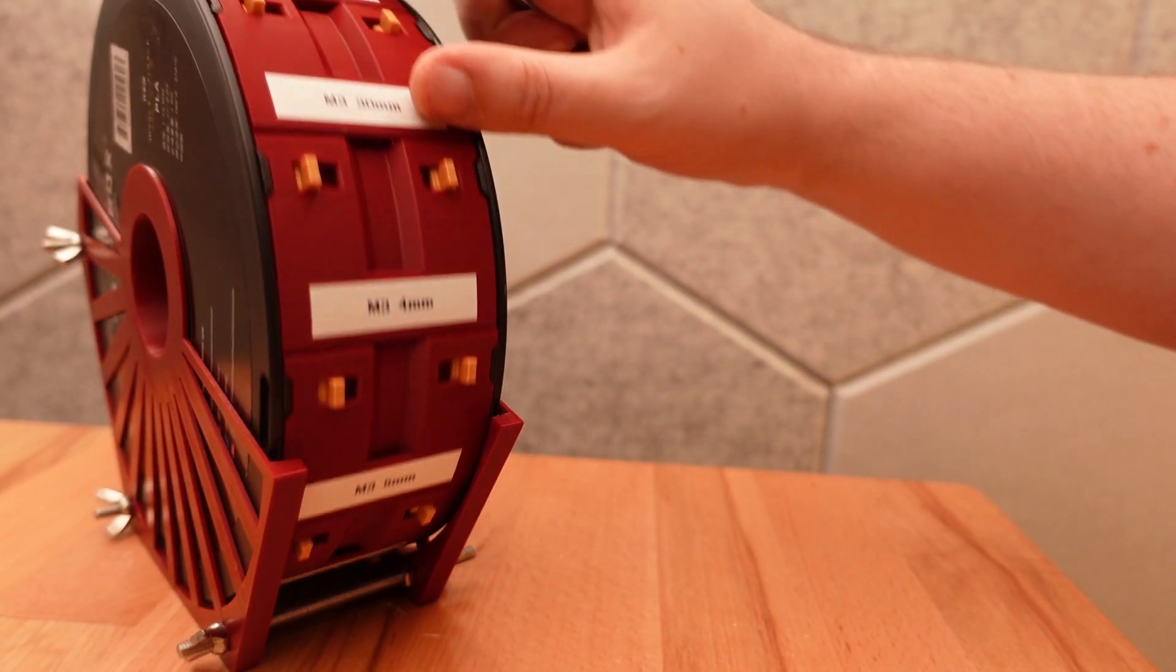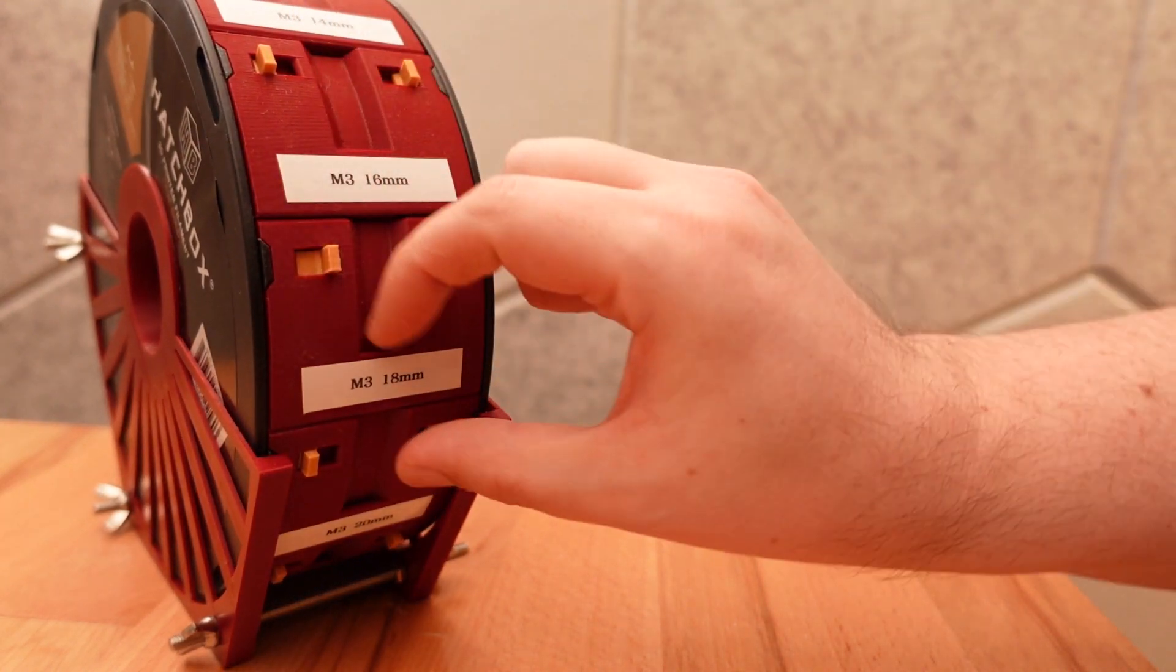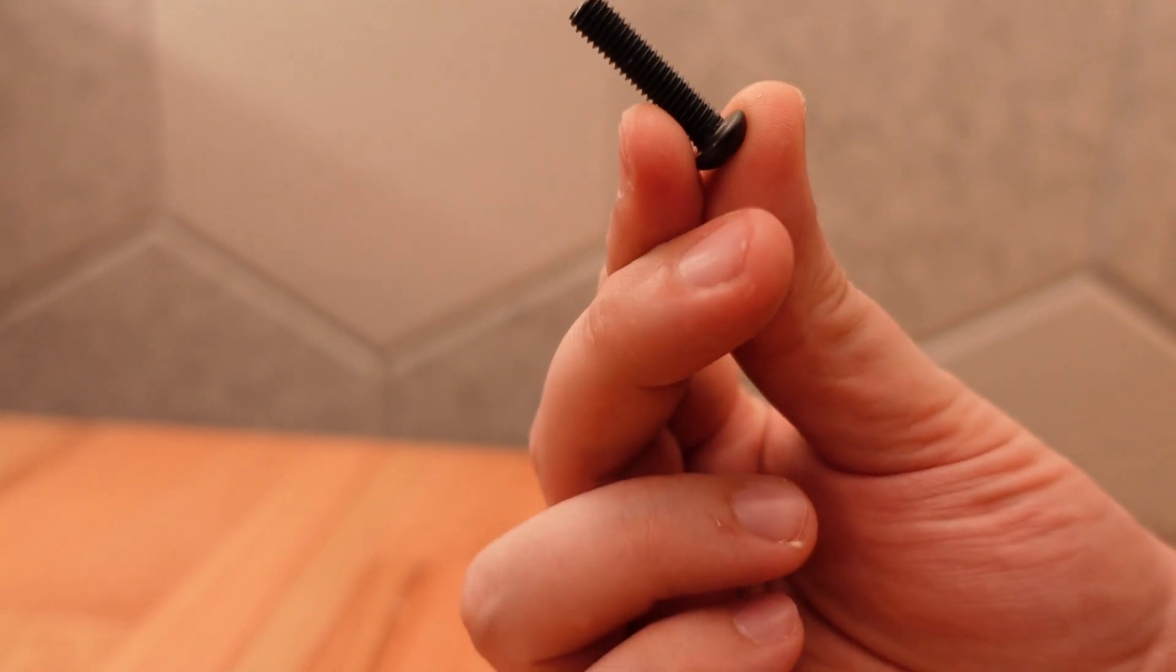To connect level 3, we'll need a single M3 bolt that's between 6 and 18mm long. For this 200% scale print, I'm going to double these to M6 bolts.